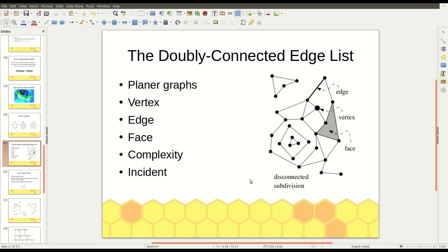So what is the term incident mean? I will explain the term incident by just showing the examples. Here you can see this vertex and this edge is incident. This vertex and this edge is incident. In the same way,